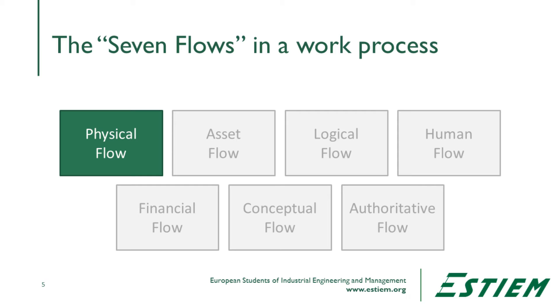In Japan they talk about flows in an organization. They've identified seven different types of flows. A physical flow is how material, parts, or sub-assemblies are actually moving in a process. Typically we see parts going into sub-assemblies, sub-assemblies going into larger assemblies, and then formulating that into a product which is packaged and shipped. That's a physical flow of work.